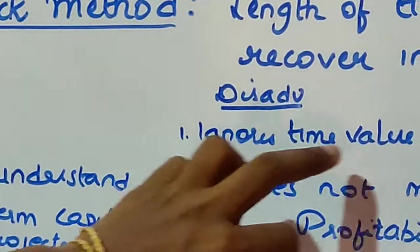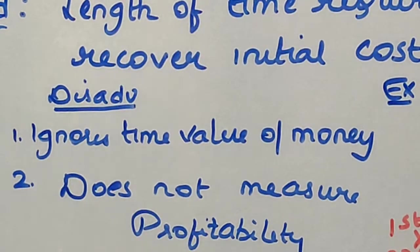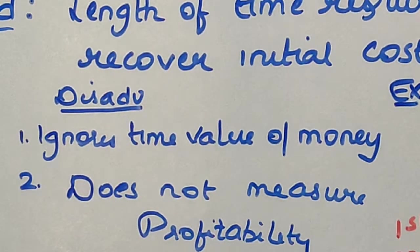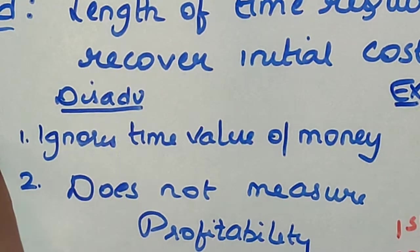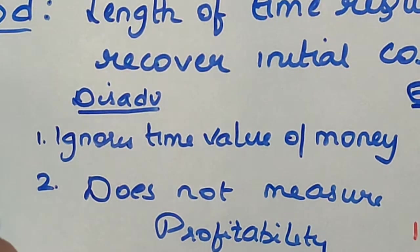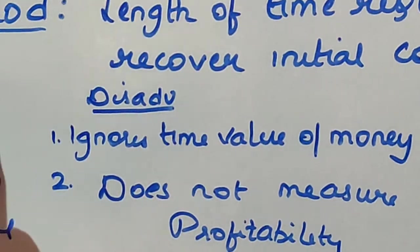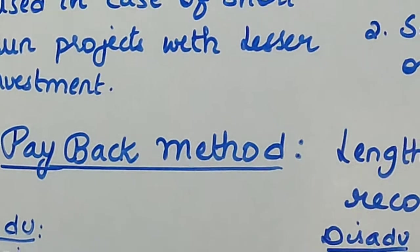The disadvantages of the payback period method: first, it ignores the time value of money — it does not give consideration to time value, assuming that whatever you invest today will remain the same even tomorrow. Second, profitability cannot be measured. A project is selected only on the basis of cost recovery; profitability is not at all considered when selecting the project.